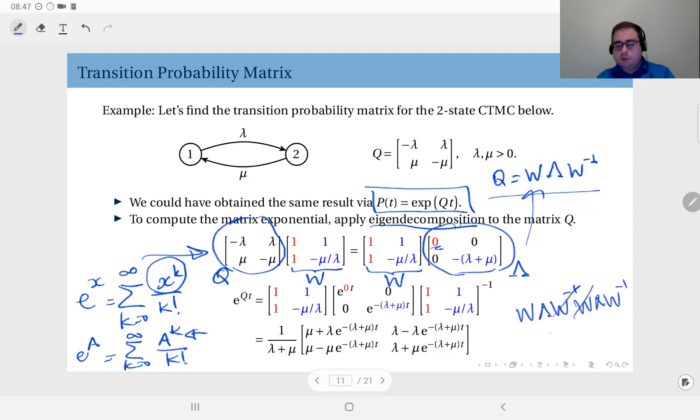You see w inverse and w, they cancel out. So what you have is w times lambda square w inverse. So this is true for any higher order terms. If you take the nth power, that will be w times lambda to the power n times w inverse.